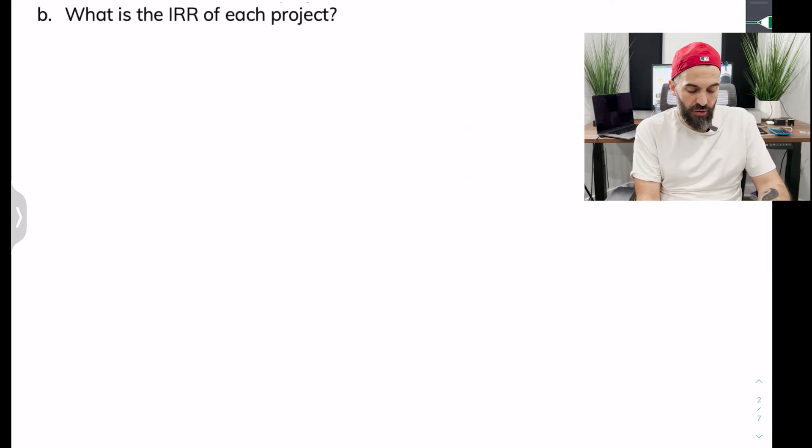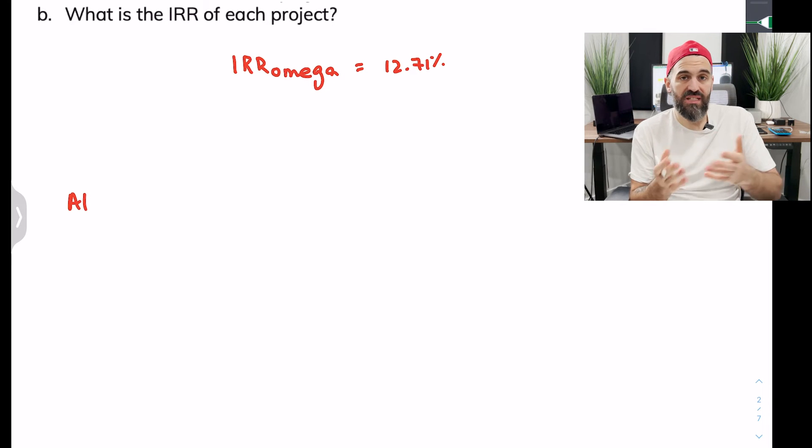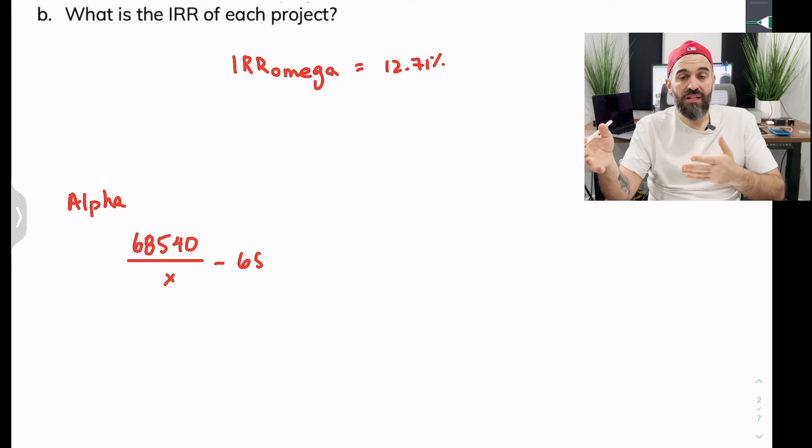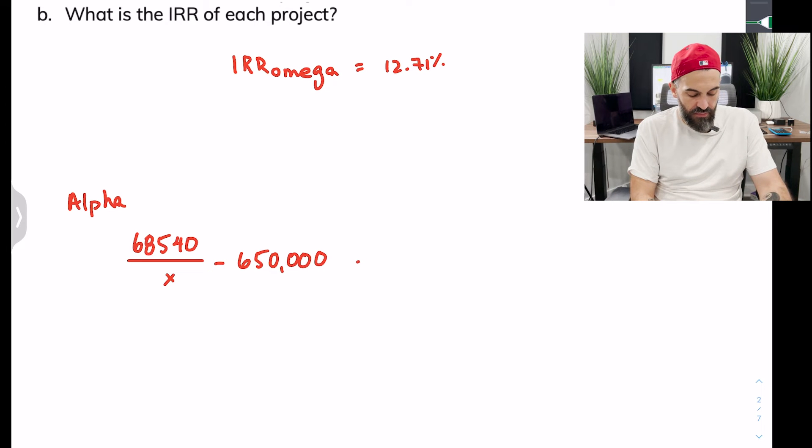For the Alpha project, given that it's perpetual, the correct way to do it would be to use the formula. So for Alpha, what I would do, what you should do, take your payment which is $68,540 divided by the discount rate but this time we're going to set the discount rate as an unknown because that's what we're solving for, subtract the initial cash flow and set that equal to zero.